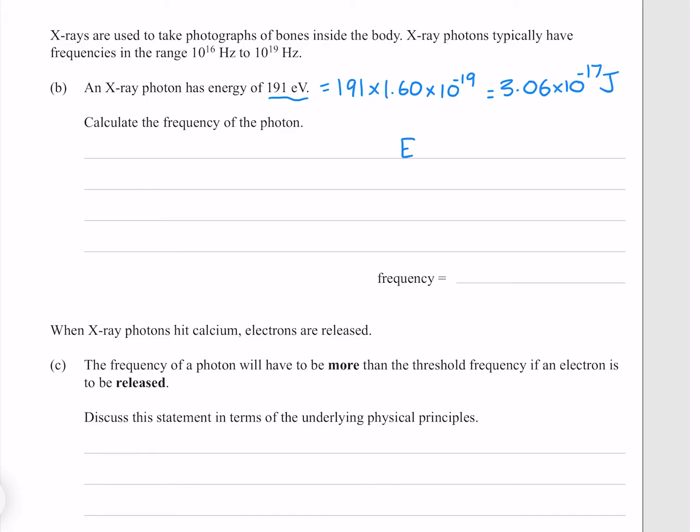Now we know that E is equal to HF, and so we know that F is equal to E over H. Putting our numbers in, gives me 4.62 times 10 to the 16 hertz.